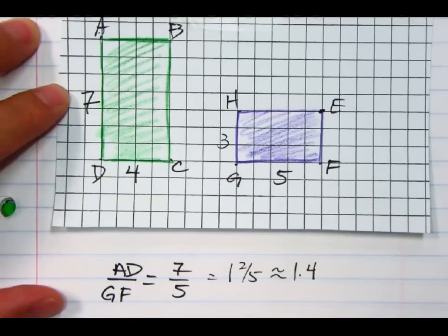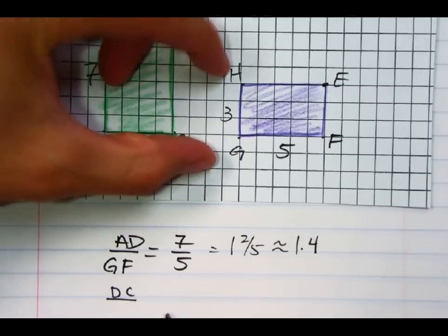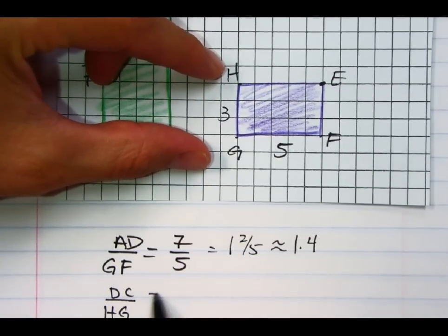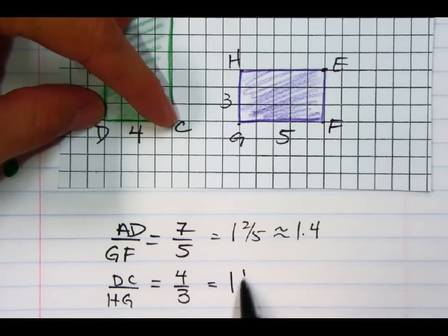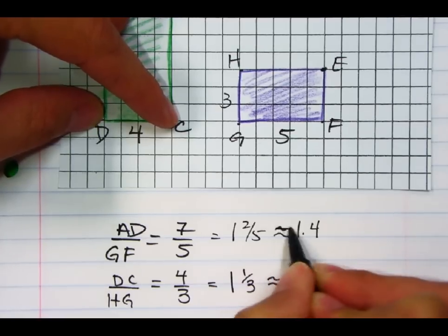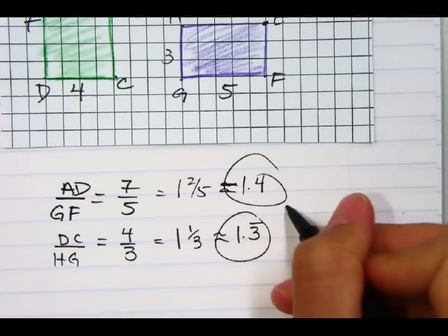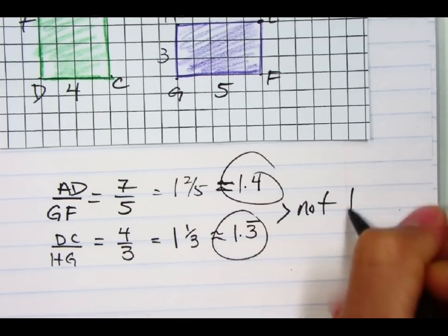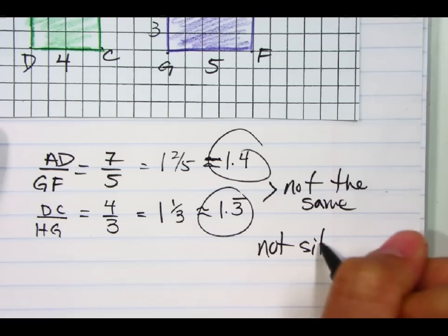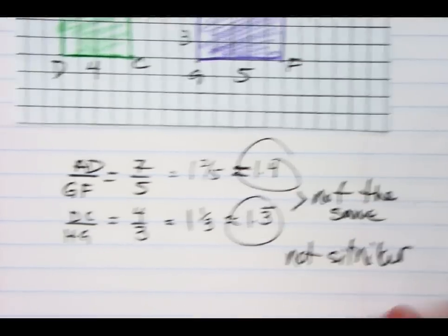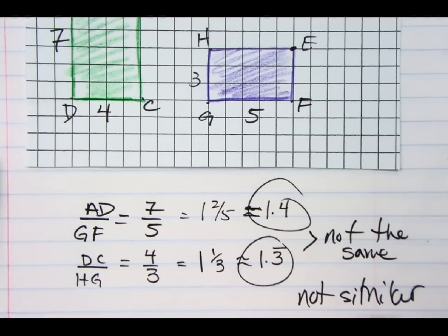Now I'm going to come back to my shapes here, and I say, look, on the green one, I'm going to talk about the short side this time. So I'm going to go from D to C, and that would be compared to H to G, which is the short side on the other one. This one was 4, and this one was 3, which equals 1 and 1 third, which is approximately, this one's actually equals, but this is approximately 1.3 repeating. So do you see these zones here? They're not the same. Not the same. So because they're not the same, they are not similar. Anyway, so yeah, you're just comparing. You're comparing the sides, and if the ratios stay the same, then they're similar. If not, you know they're not similar.